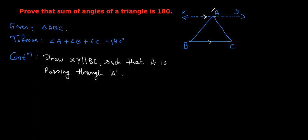Such that it is passing through A, isn't it? Otherwise, line can be like this. Parallel to BC can be here also, no? But you have to specify that it is passing through point A.